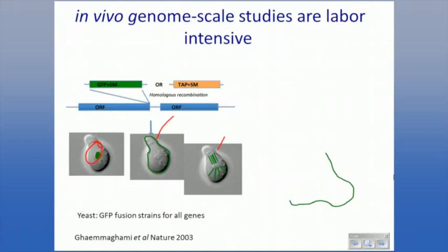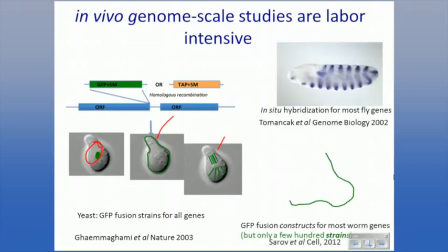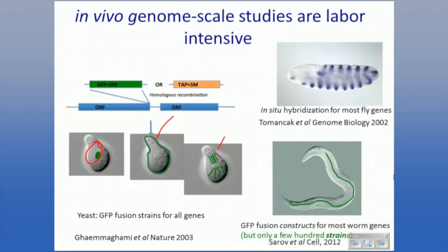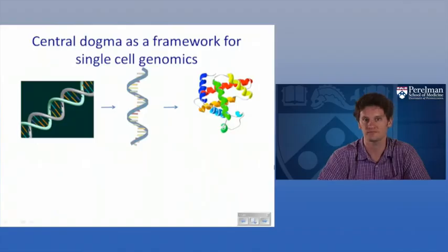And if you decide you want to look at what happens to all these proteins when you grow yeast on galactose instead of glucose, you have to take 6,000 more pictures — it doesn't scale very well. The same is true for worms or flies — there have been large-scale in situ hybridization projects in flies and GFP fusion constructs made for nearly all genes in worms, but only a few hundred have been made into worm strains where you can actually look at where the protein goes. Doing studies at genome scale is really hard, probably not feasible in most cases.